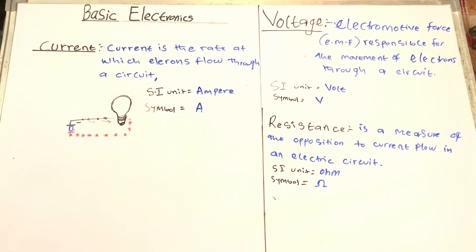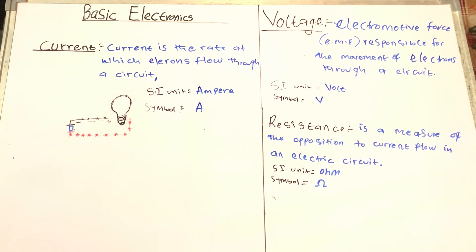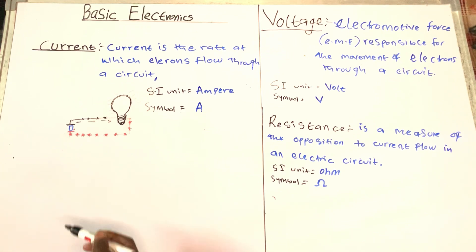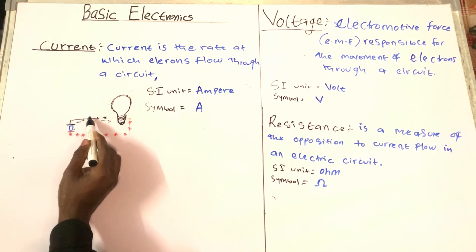So what exactly is current, and what exactly is voltage, as well as what is resistance exactly? As you can see from here, current is the rate at which electrons flow through a circuit. What this means is, as you can see from the diagram here, these tiny particles here are the electrons.